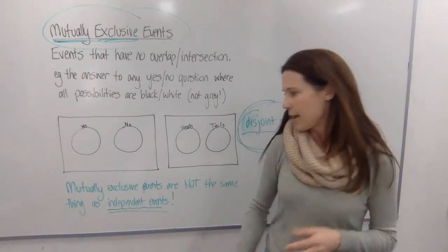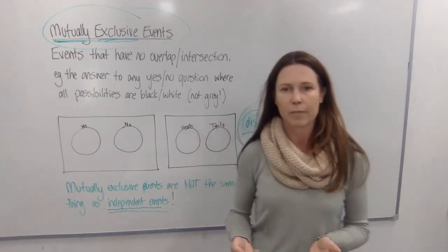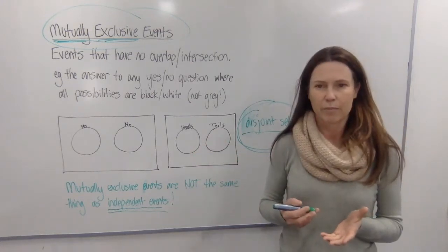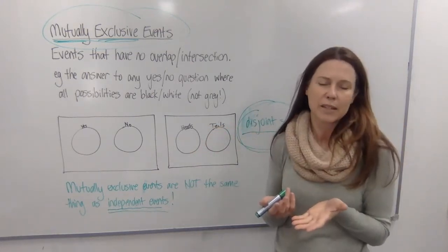Now you probably wouldn't put the outcomes of that sort of experiment, tossing a die and flipping a coin at the same time, in a Venn diagram because the crossover and the sets don't really make sense.